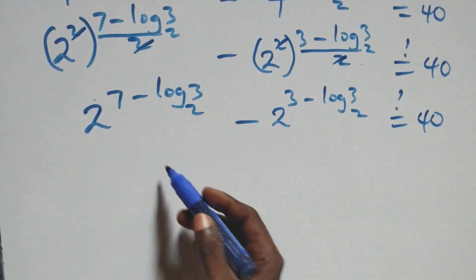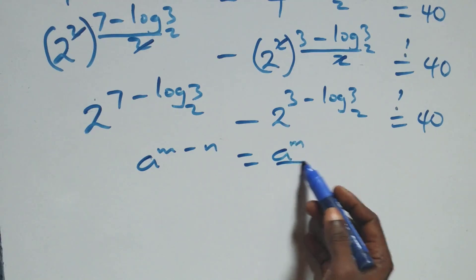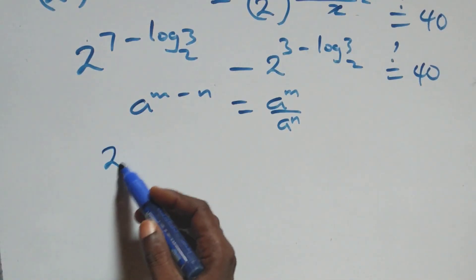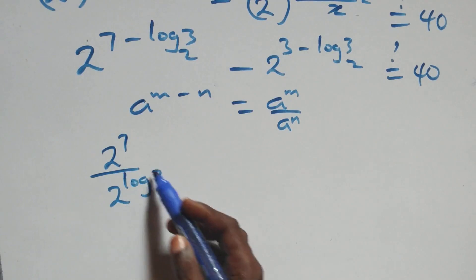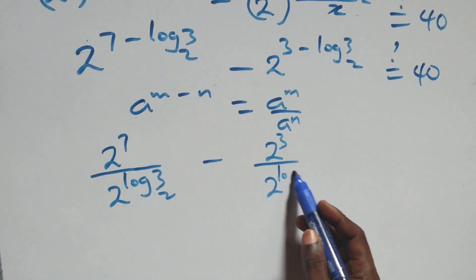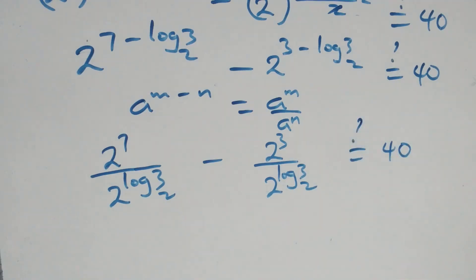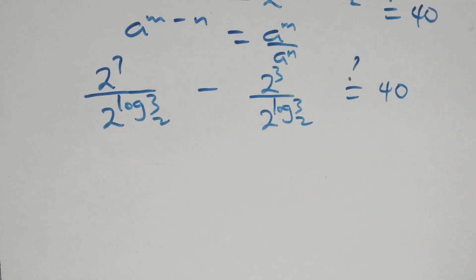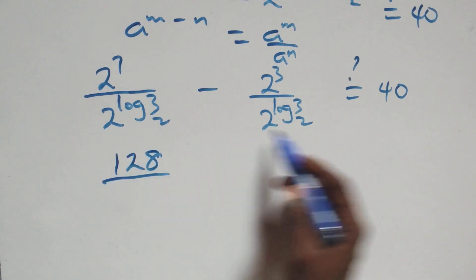Applying the law of indices, a raised to power n minus m equals a raised to power n over a raised to power m. So we express this as 2 raised to power 7 over 2 raised to power log 3 base 2, minus 2 raised to power 3 over 2 raised to power log 3 base 2, equals 40. Now 2 raised to power 7 is 128, and using the identity a raised to power log base a of n equals n, we have 2 raised to power log 3 base 2 equals 3.